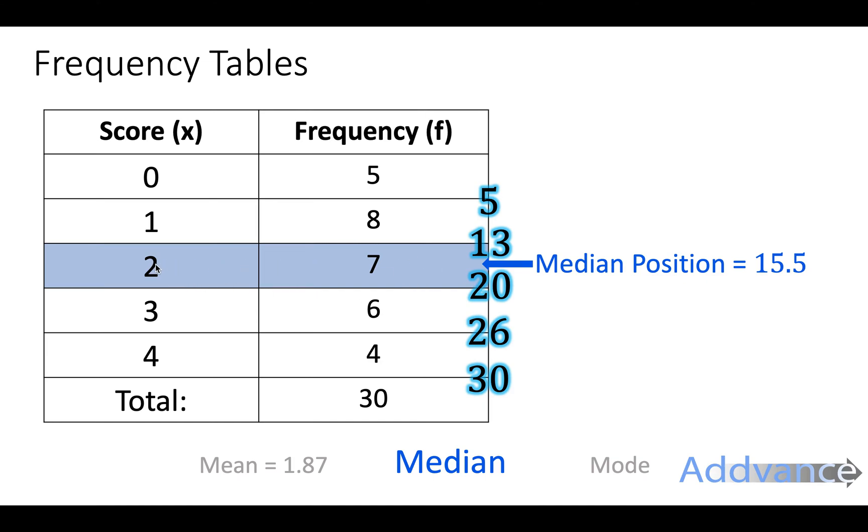So the median is a score of 2. What I just did there is I did 30 plus 1, the total frequency plus 1 divided by 2, which gave me 15.5. I was then looking for the 15.5th number, and to find that I added the frequency as I went along: 5 plus 8 is 13, plus 7 is 20, plus 6 is 26, plus 4 is 30.